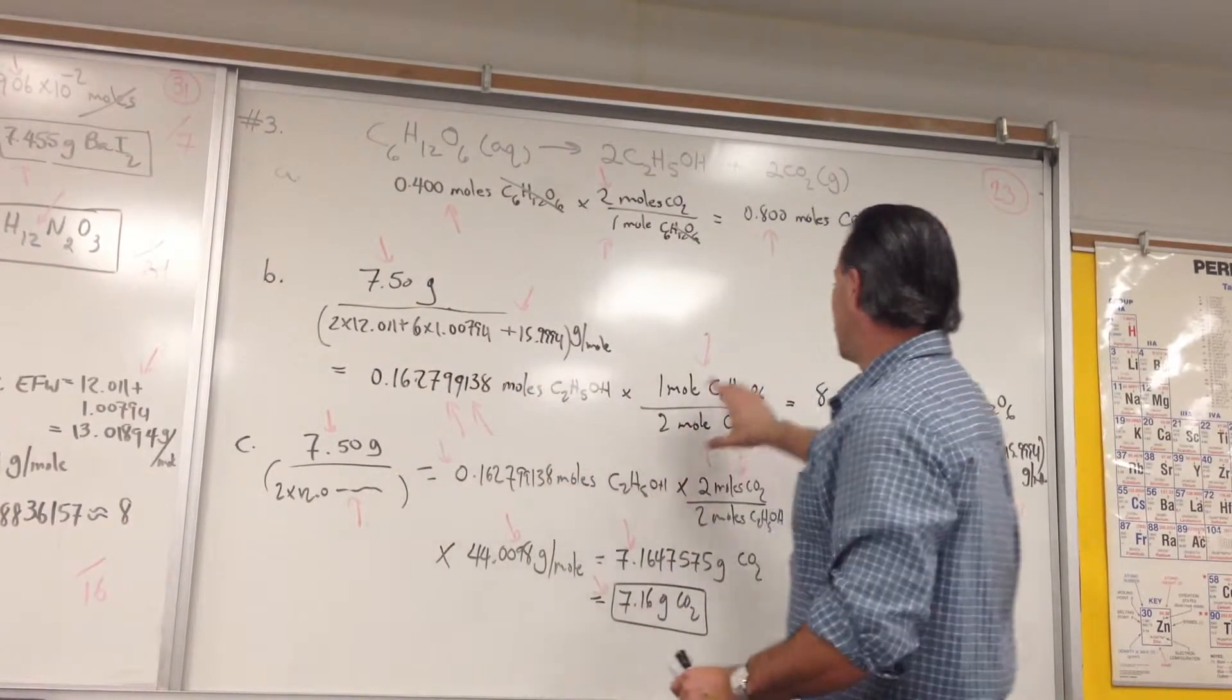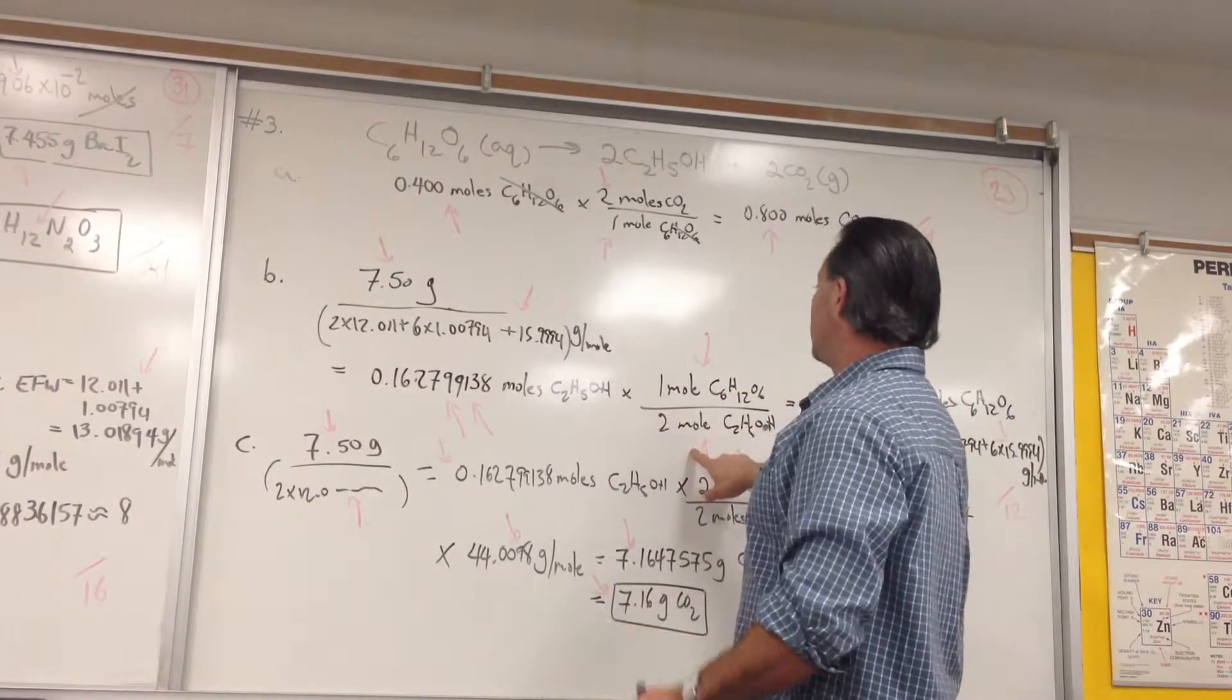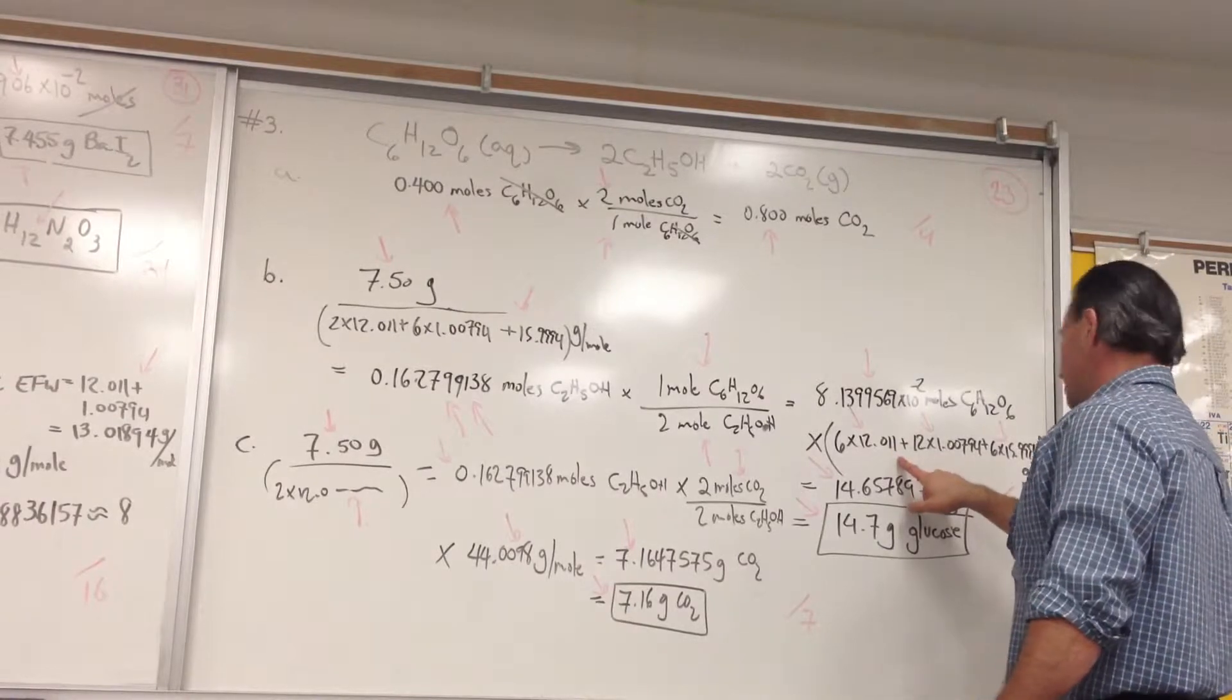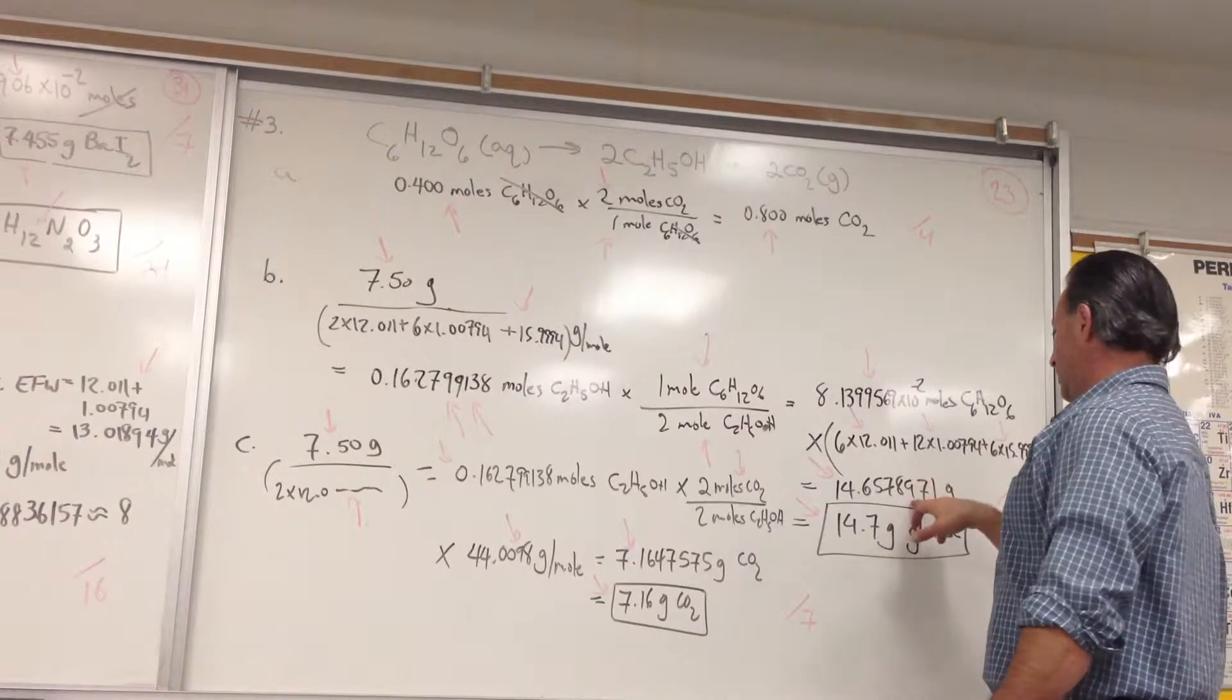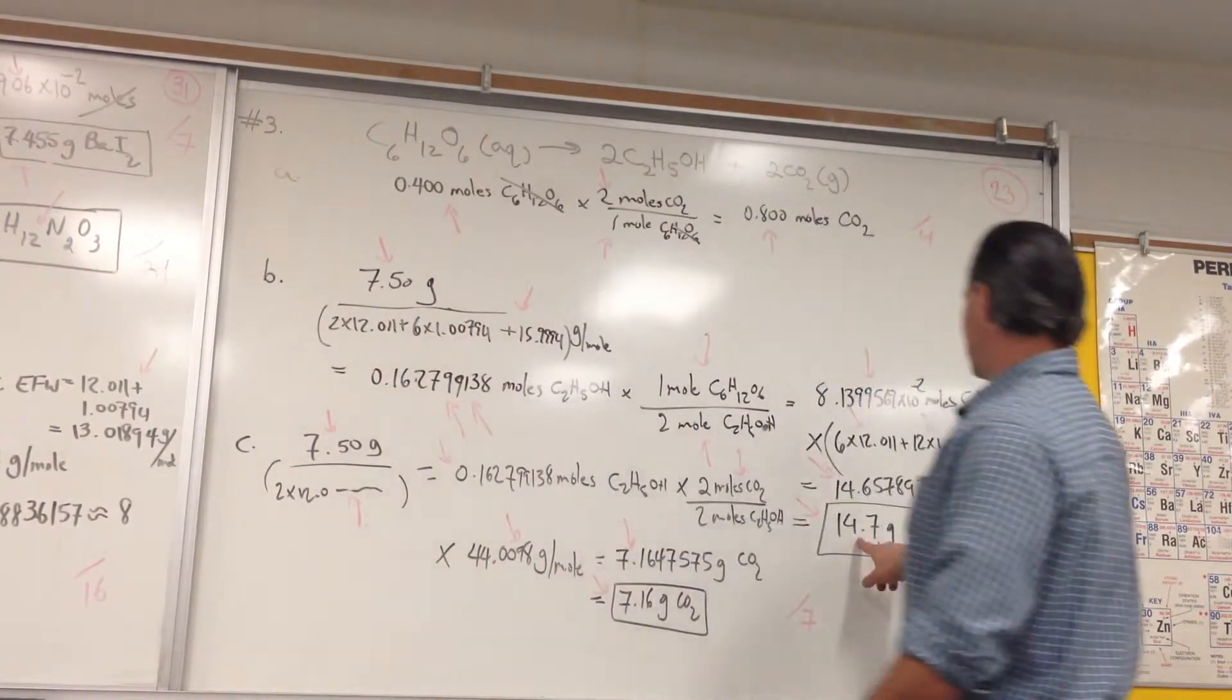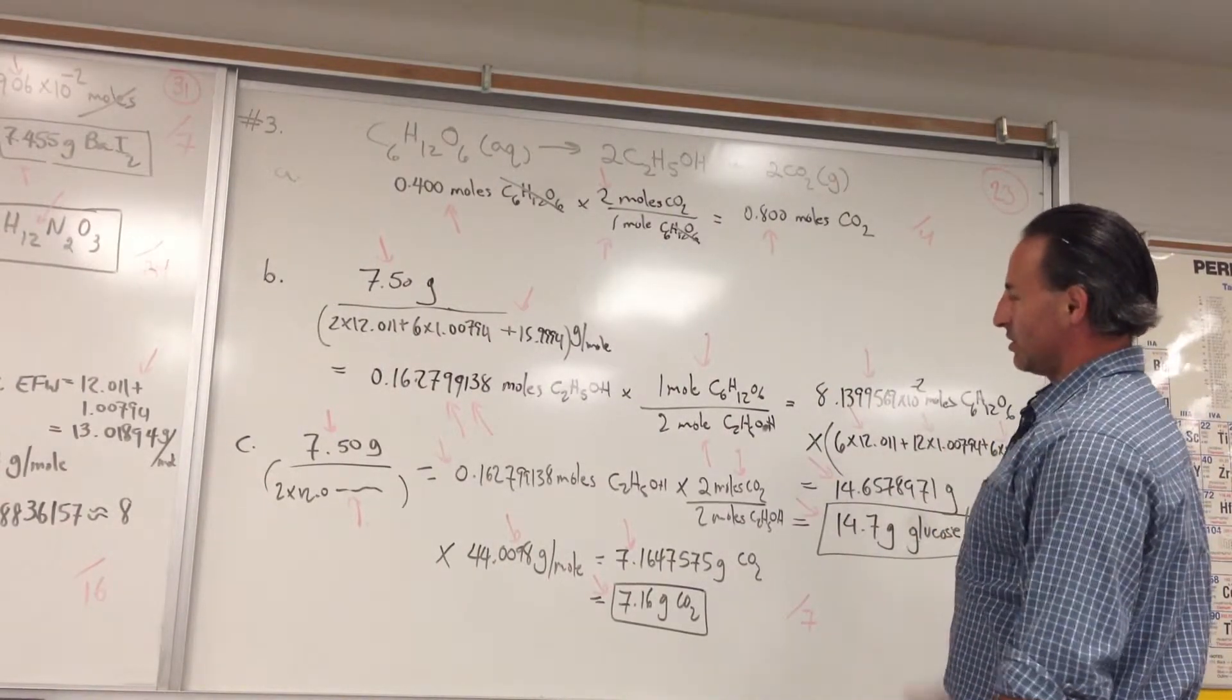Then, multiply by the stoichiometry, which is 1 to 2. For every 1 mole of glucose that you react, you get 2 moles of ethanol. And that tells you how many moles of glucose was reacted. And then you multiply by the molar mass of glucose, which is 180 grams, roughly. To give you that, you'll get 14.657 grams. Put it in 3 significant figures, because the question only has 3 significant figures in it. So, the final answer is 14.7 grams of glucose is needed to generate 7.5 grams of ethanol, according to the stoichiometry.